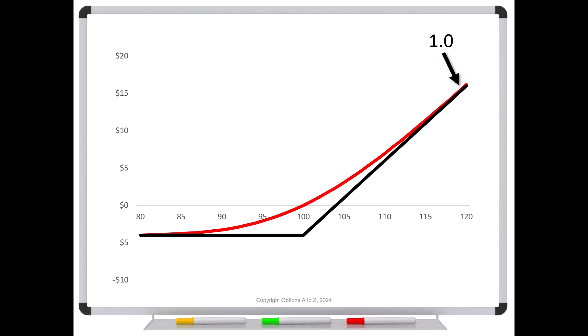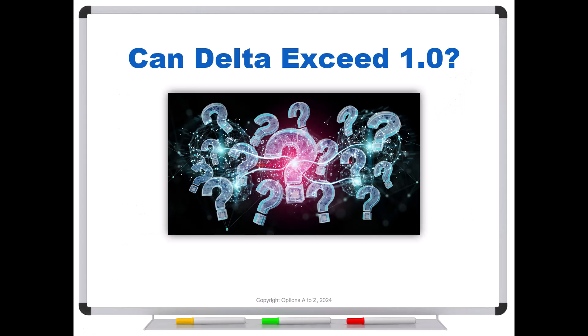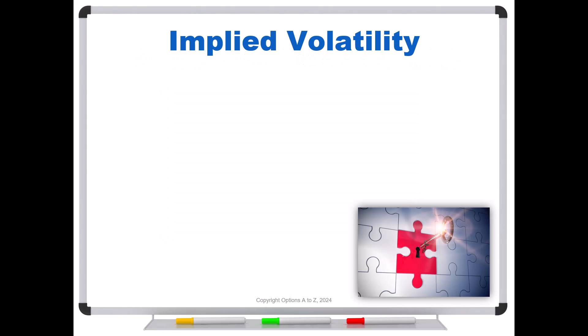That was kind of the question. And so let's come back to the question, can the delta exceed one? Well, the answer is yes. But it's really an illusion. And that's because it's really due to implied volatility.